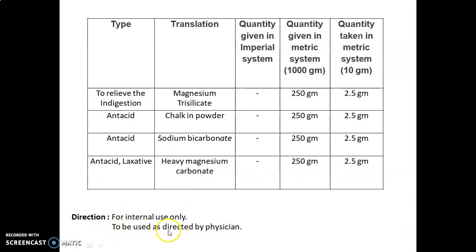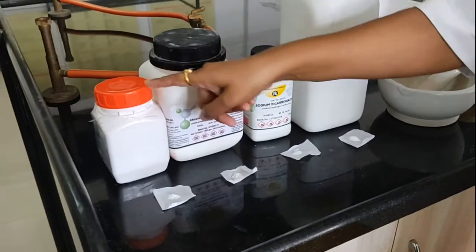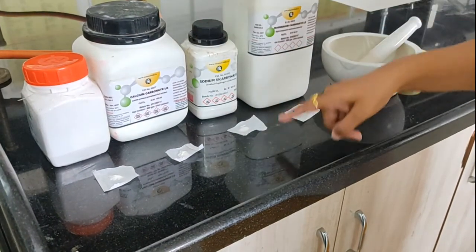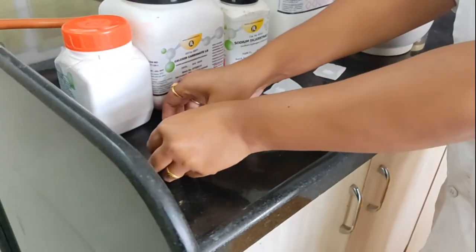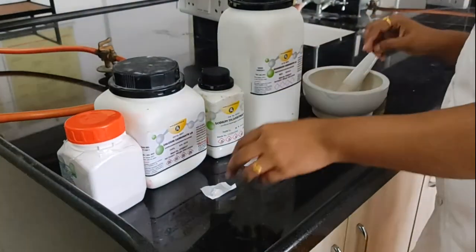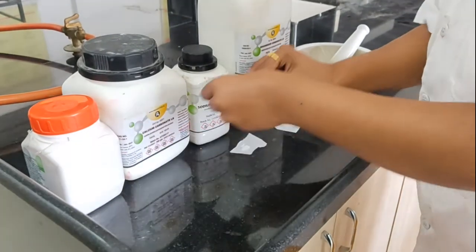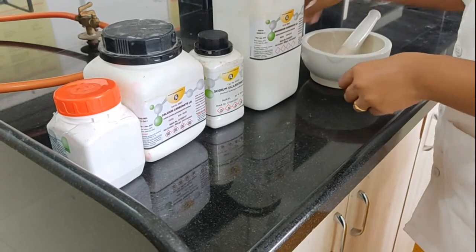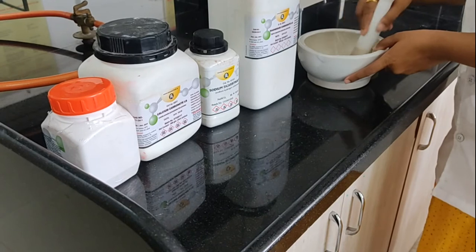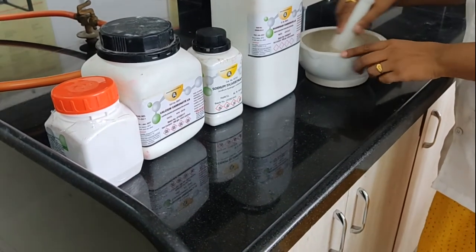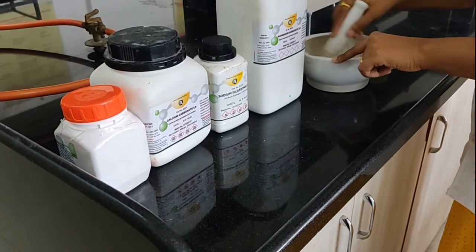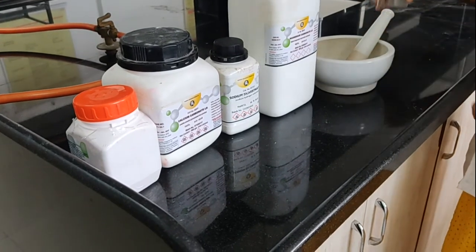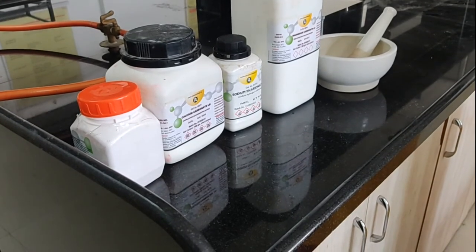For internal use only, to be used as directed by a physician. We have magnesium trisilicate, calcium carbonate (chalk powder), sodium bicarbonate, and magnesium carbonate. All four powders are transferred into the mortar for proper mixing, and trituration is carried out until all powders are properly mixed. After proper trituration, the powder is transferred into a wide-mouth dry bottle, and we proceed to the labelling part.